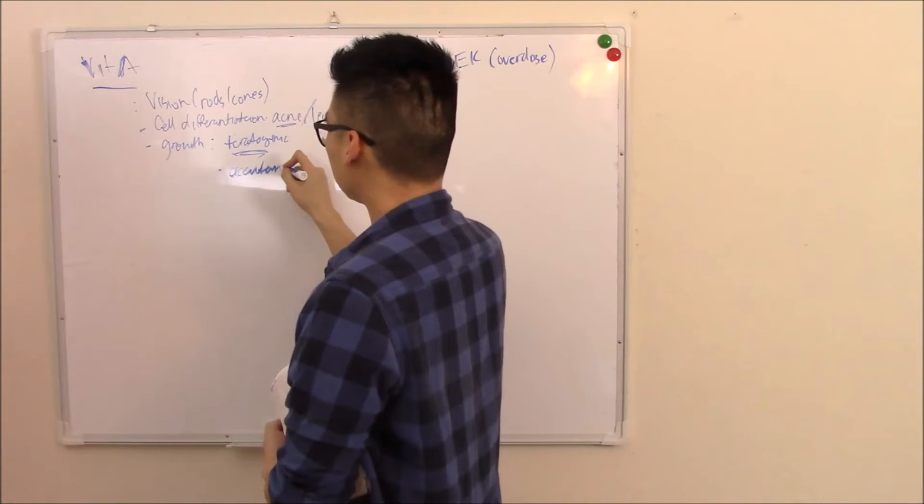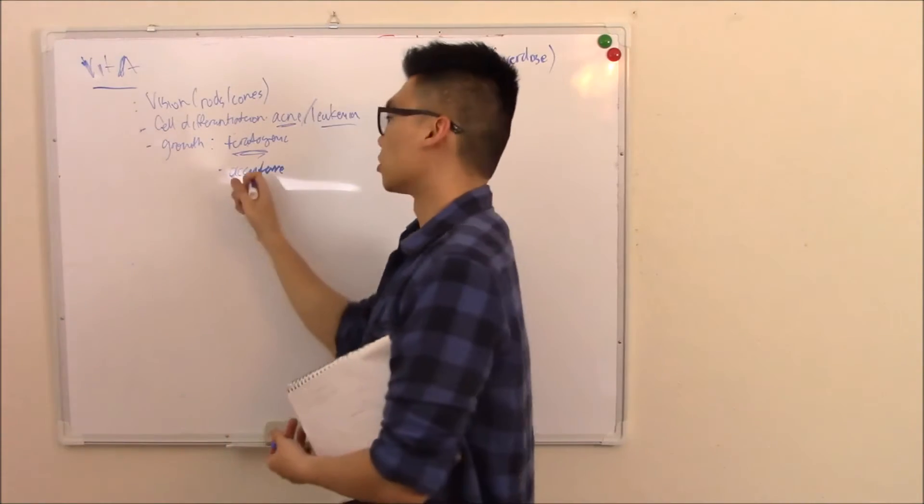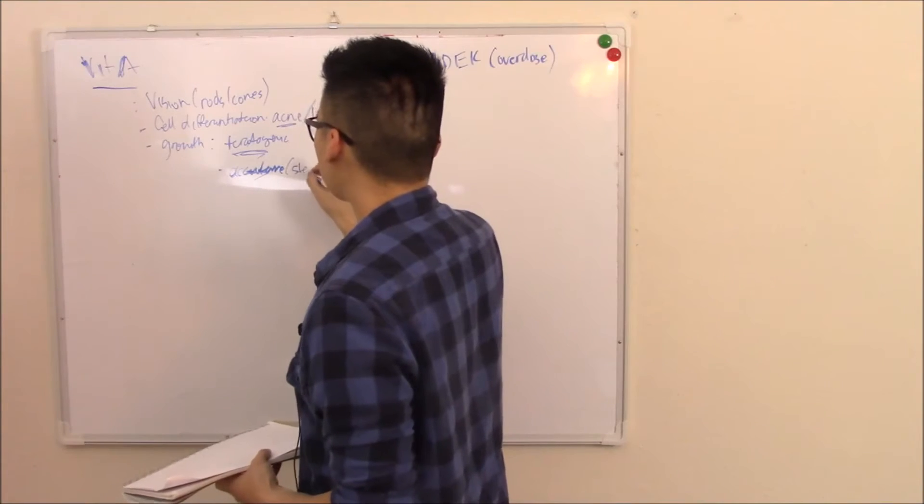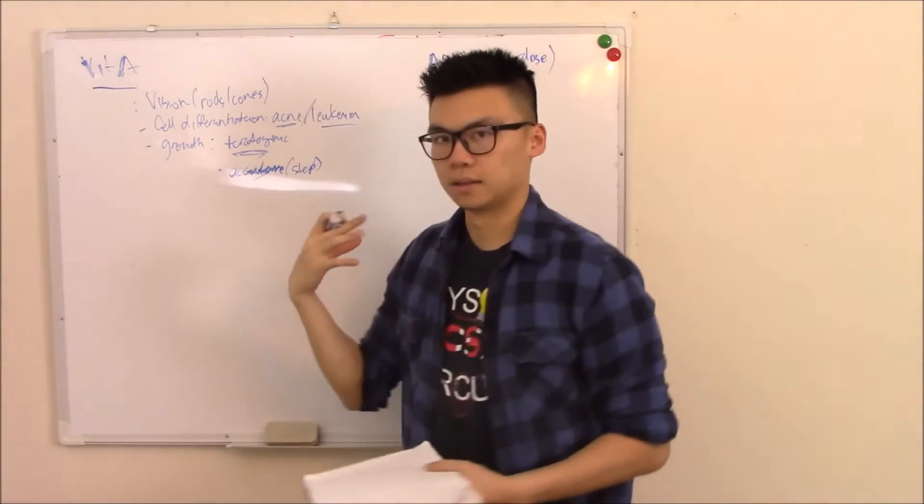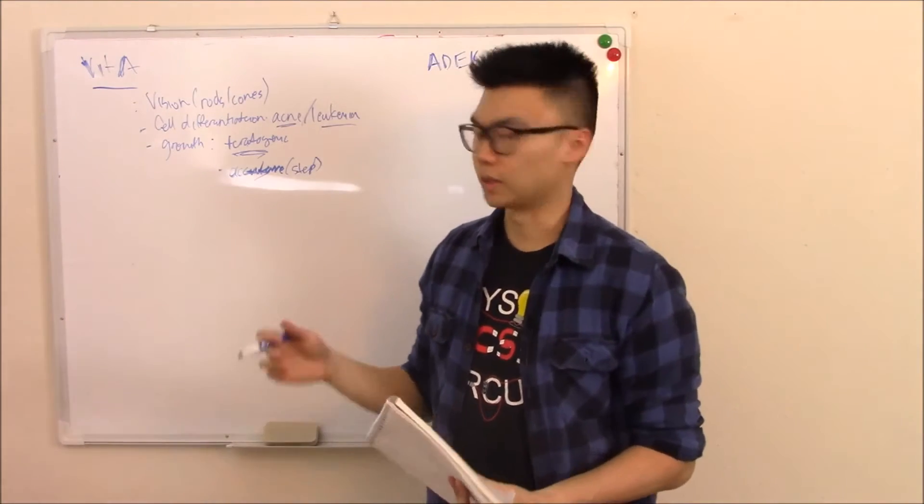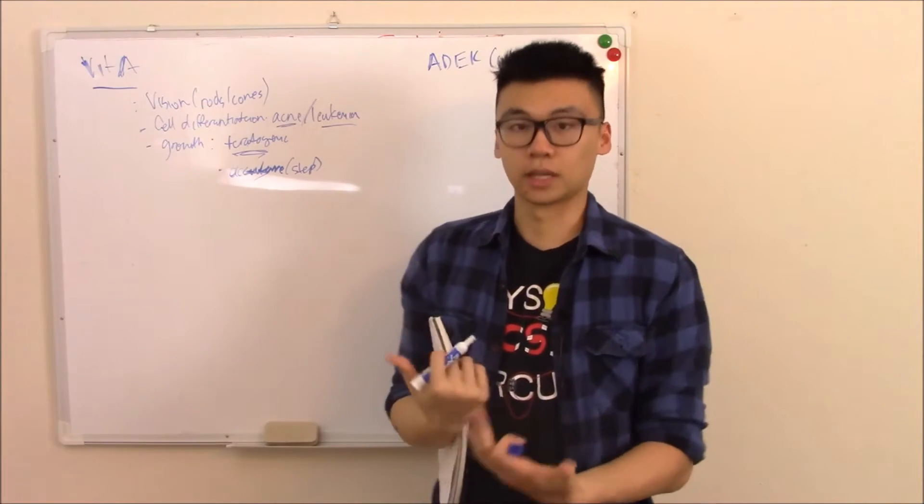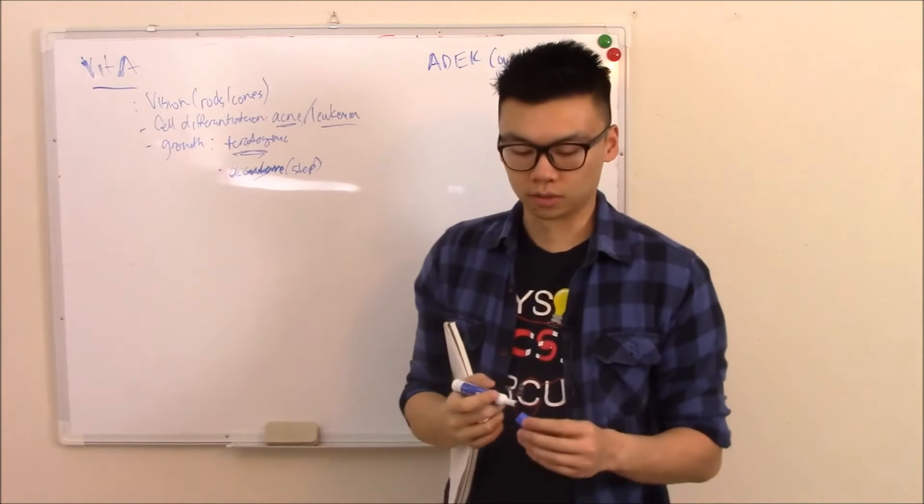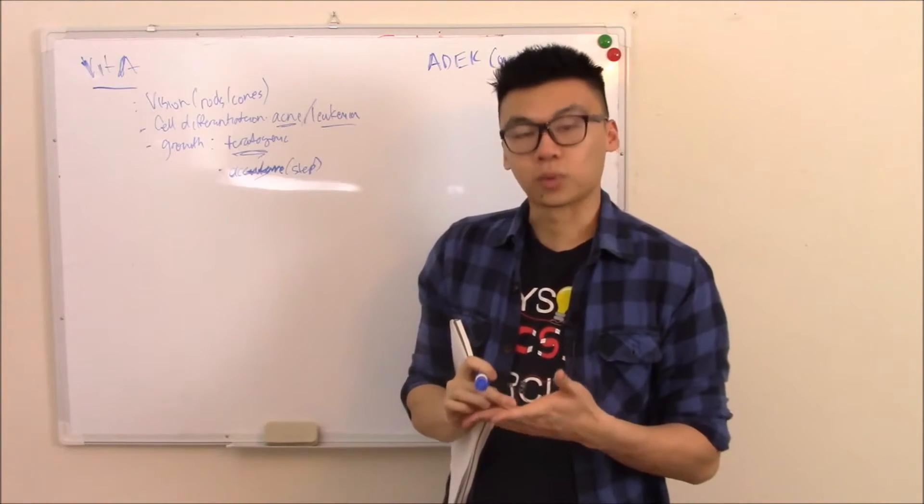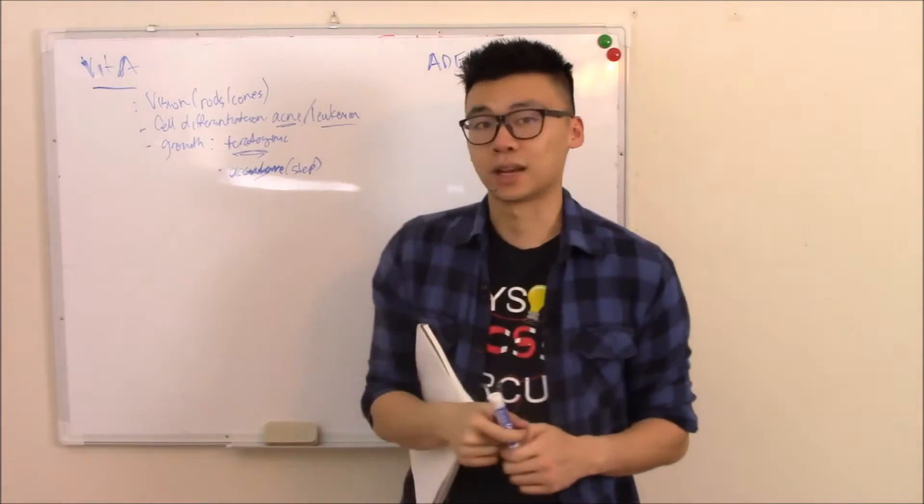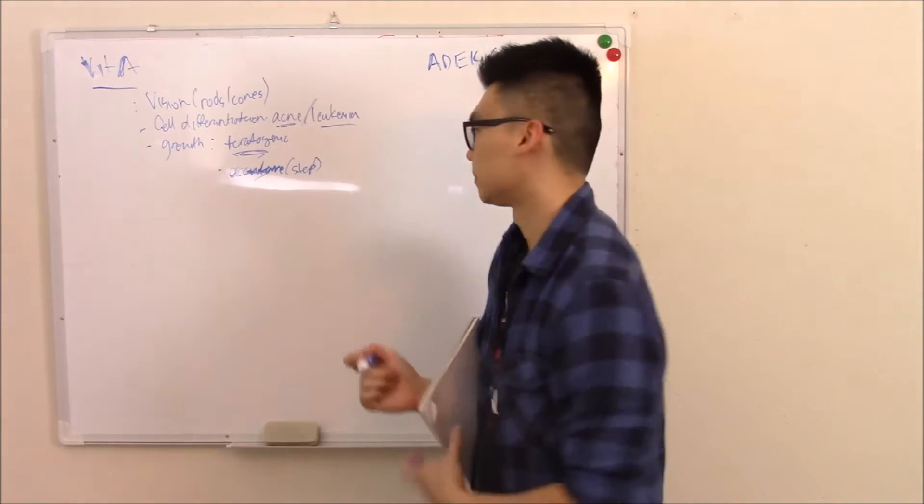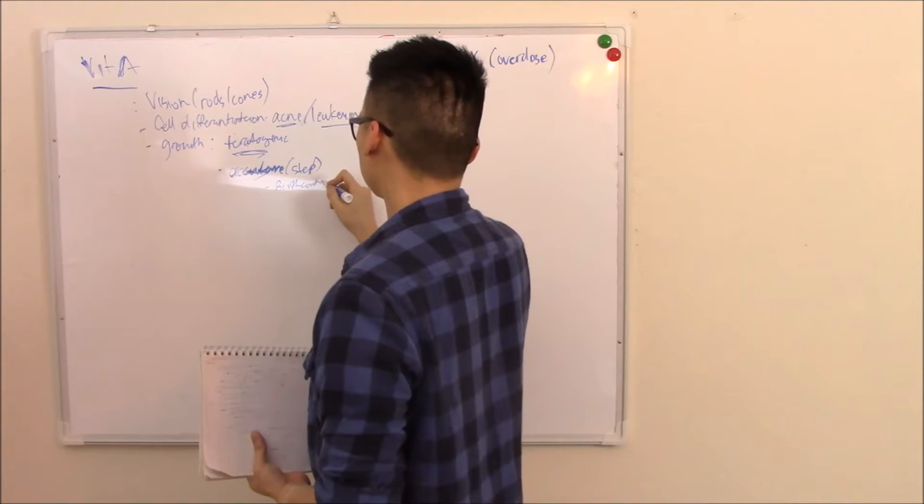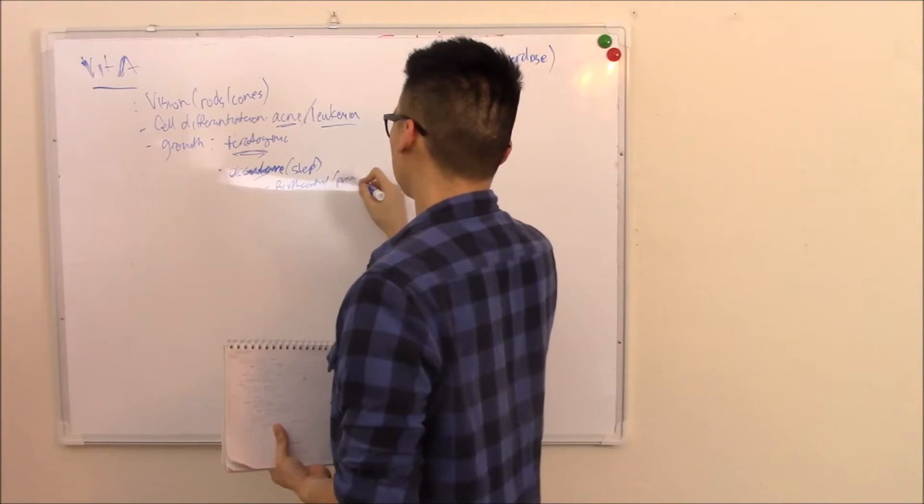Accutane, which is a trade name for a form of vitamin A. So they might ask, and I've seen this asked on the step, patient wants to get treatment for their acne, what should they do? Well you would get a pregnancy test first, and then you would put the patient on birth control. That way they won't get pregnant, won't get those teratogenic effects because they can be devastating. So birth control and a pregnancy test.